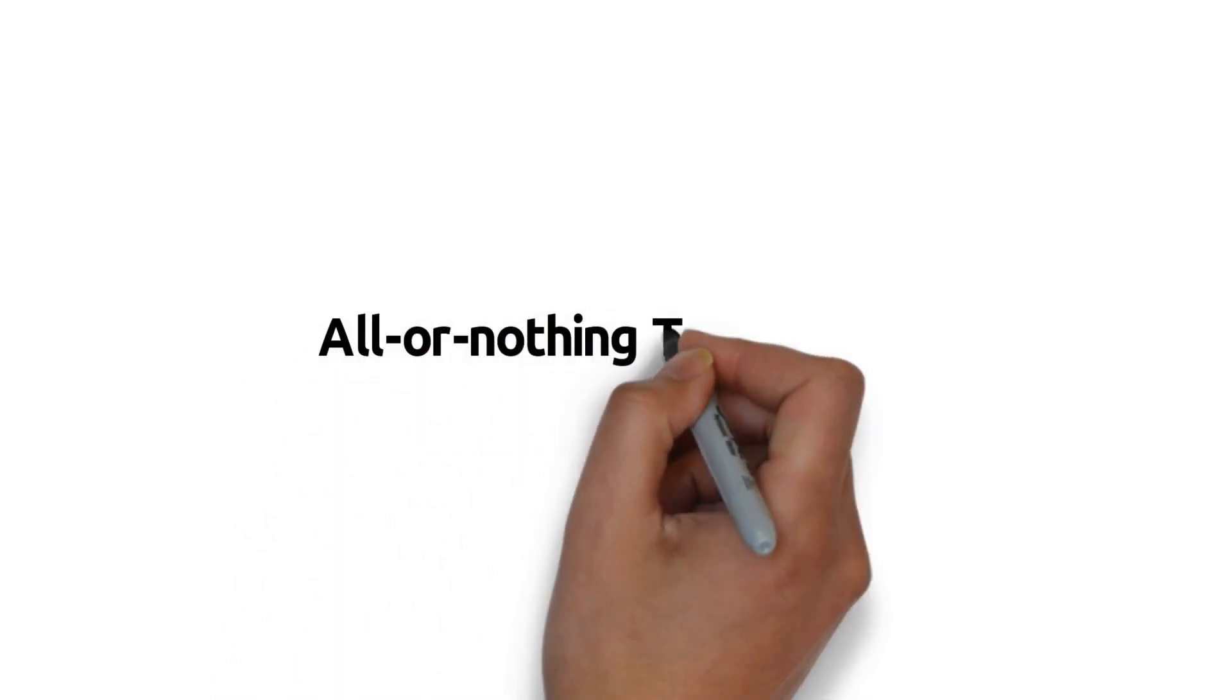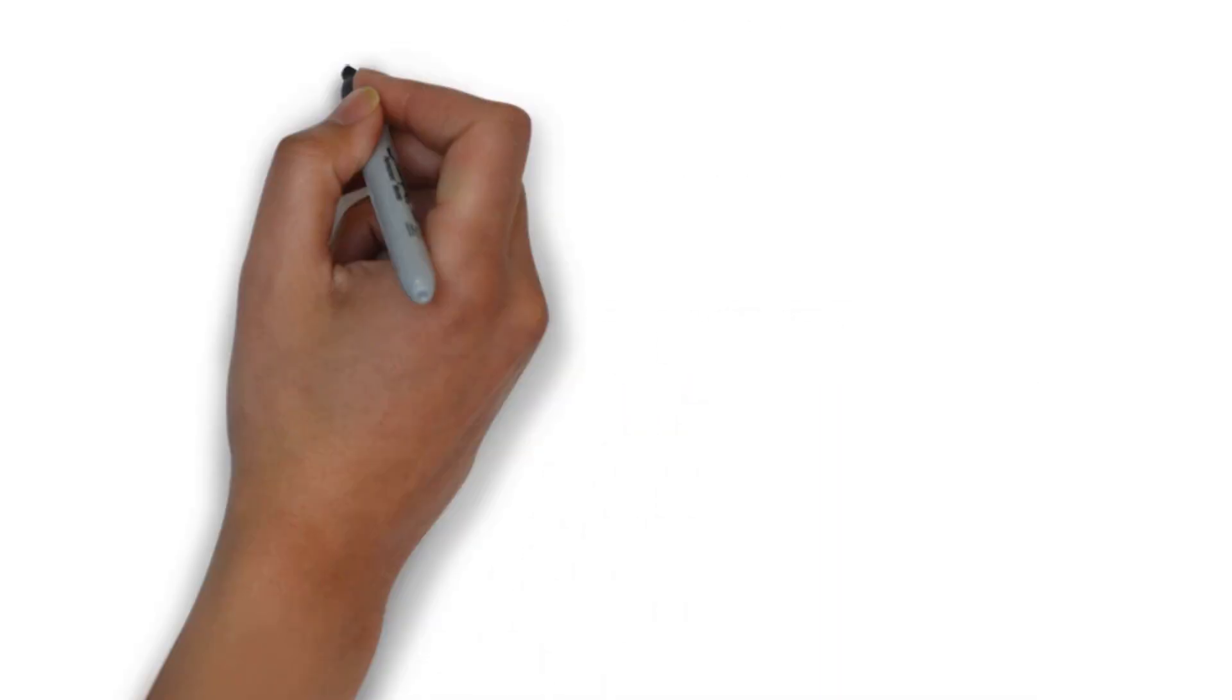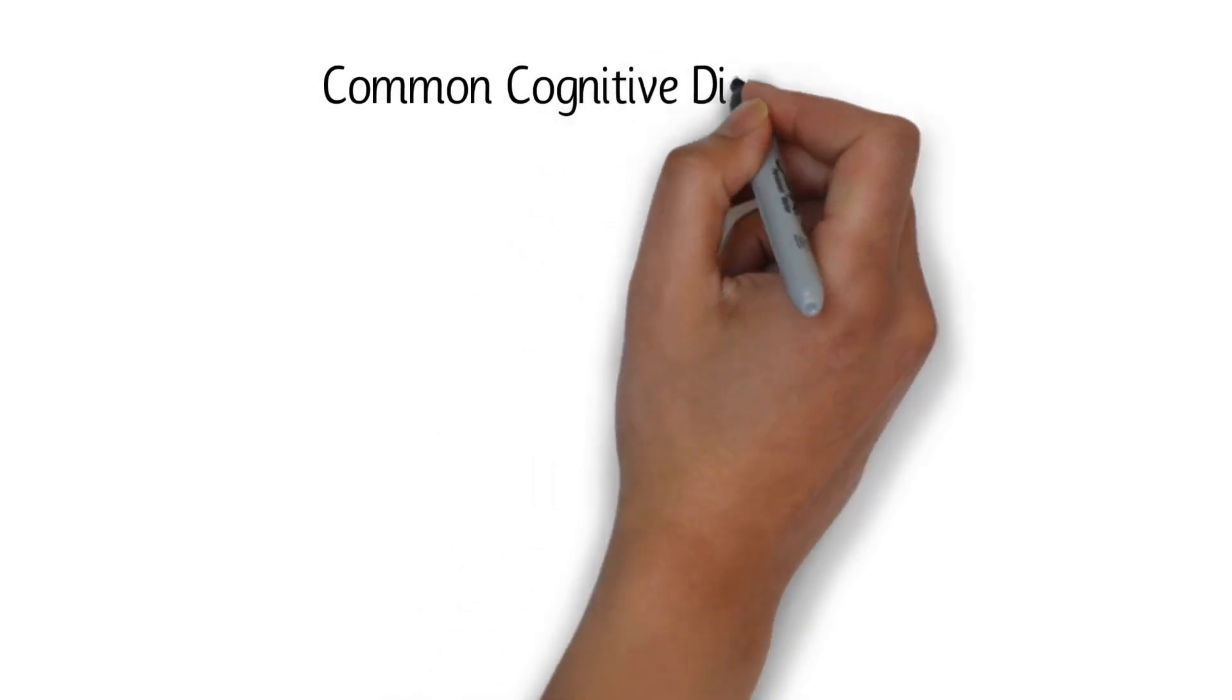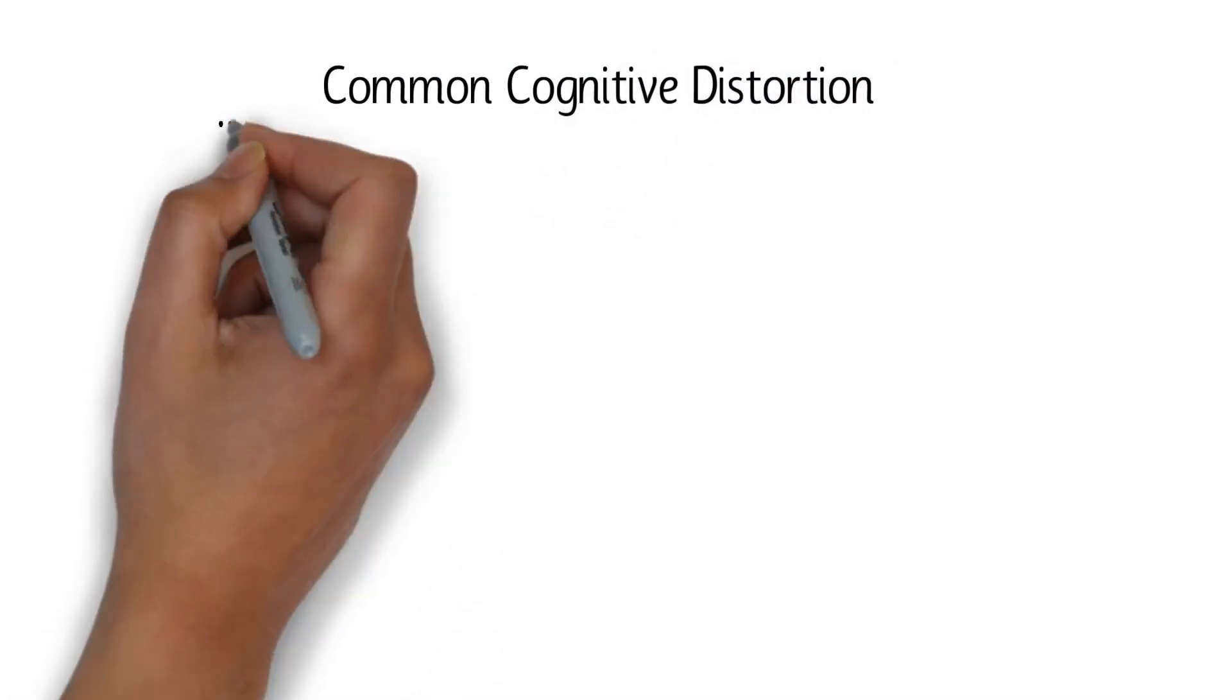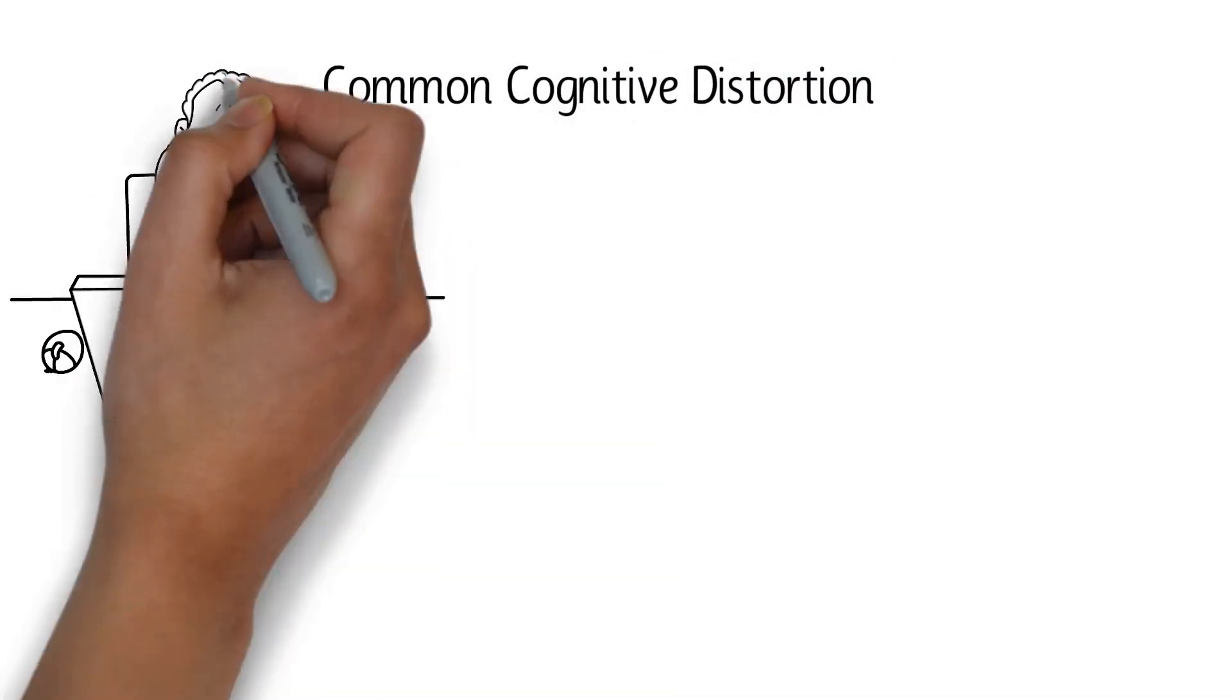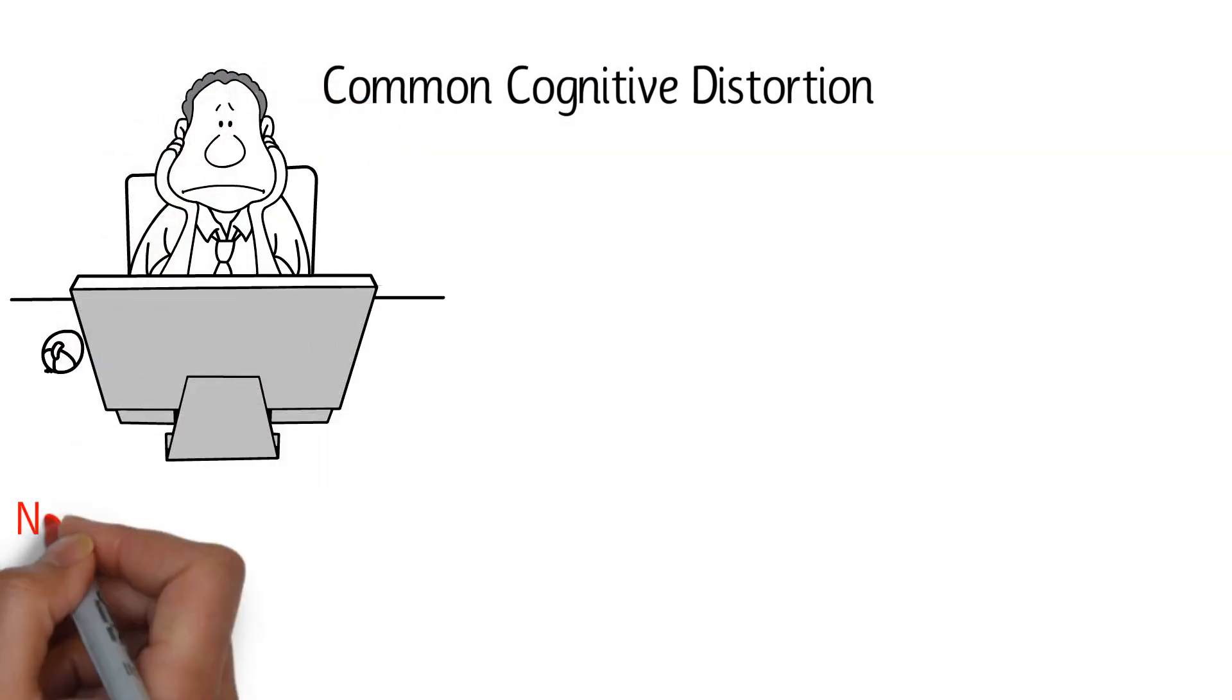All or nothing thinking. All or nothing thinking is a common cognitive distortion in which you see things in absolute categories. This frequently includes statements like I never do a good enough job on anything. There's no room for middle ground.